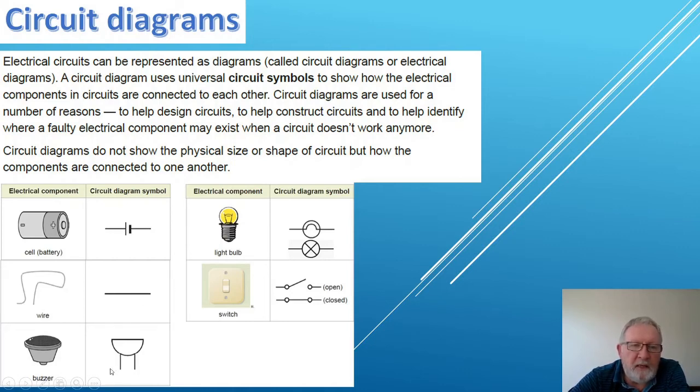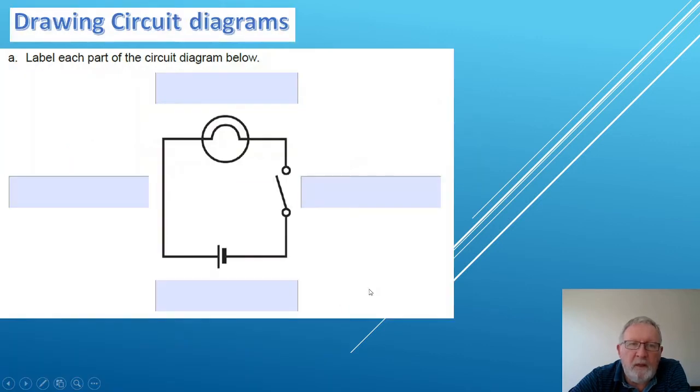This is a symbol for a buzzer. There are a couple of different symbols you'll come across for lamps or light bulbs. Those two there. And then the switch symbol is another common symbol. And this is a switch in an open position and a switch in a closed position. Of course when it's open the circuit is broken and so electricity won't flow. Closed or switched on means that it will flow.